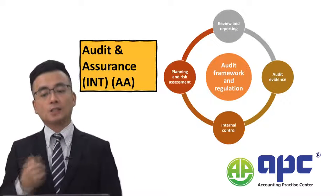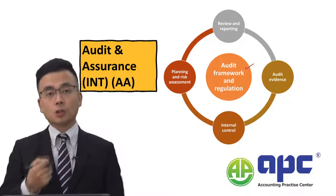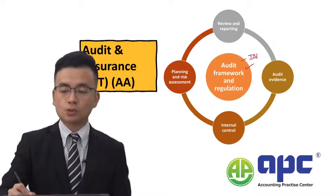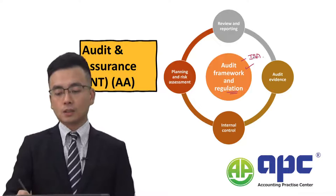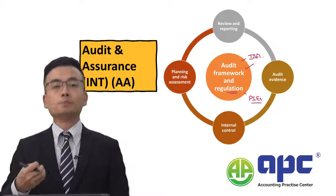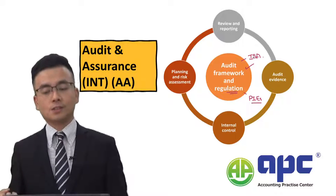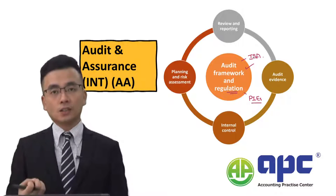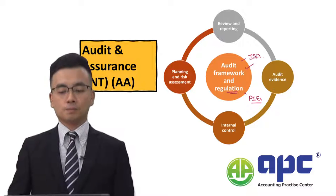As an introduction to the AA syllabus, we first need to know the audit framework. We are studying the International Standards on Auditing, which is the ISA in this particular exam. There will be certain regulations, particularly for public interest entities — or PIEs. For example, publicly listed companies are an example of public interest entities. We then need to consider the Companies Act and the international standards on auditing in regulating our activities.